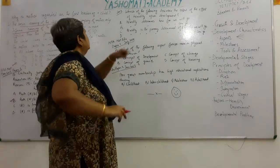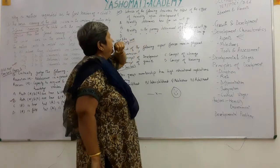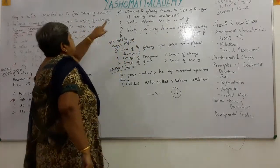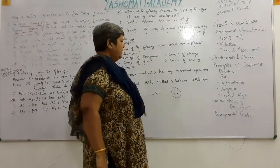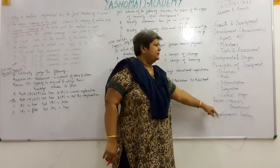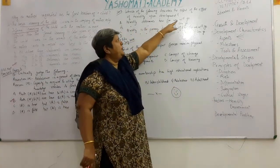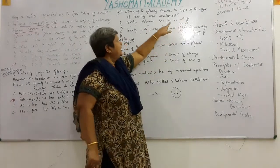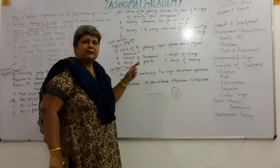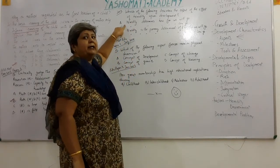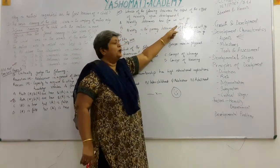Next question from the 2013 paper: Which of the following describes the extent of the effect of heredity upon development? We studied heredity and environment as two factors. Heredity determines how far we will go — it is controlled by genes and sets the limits.